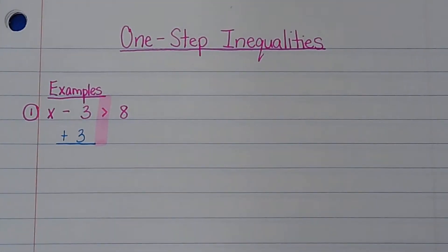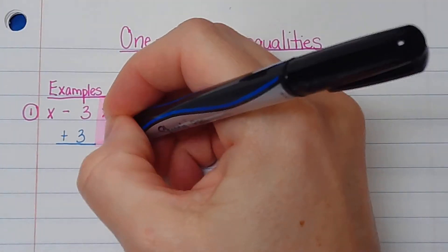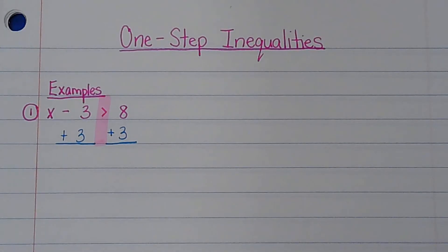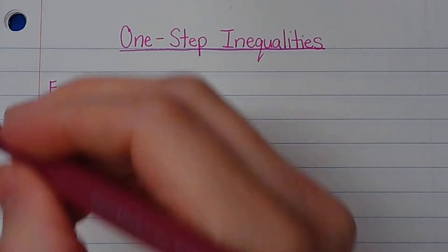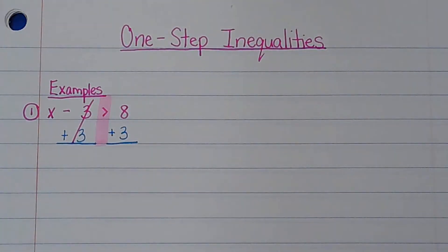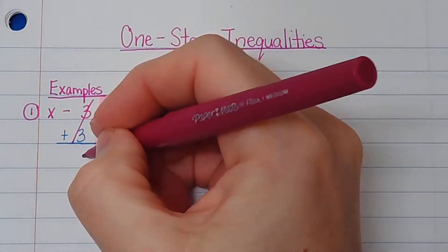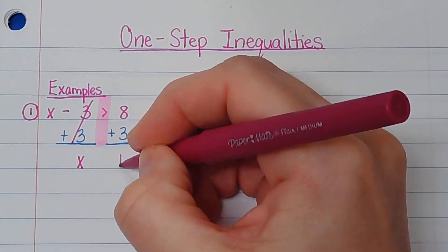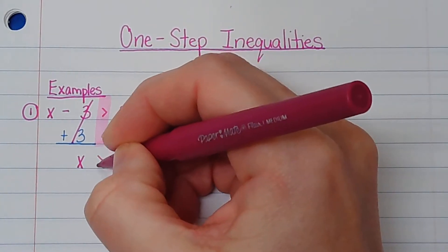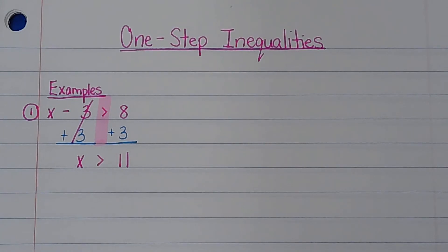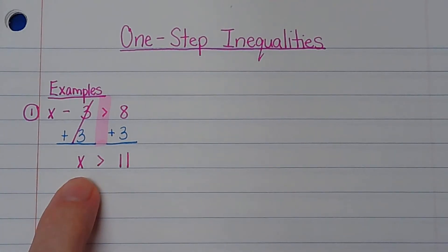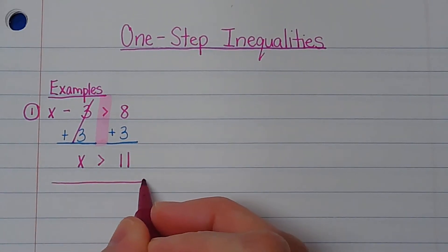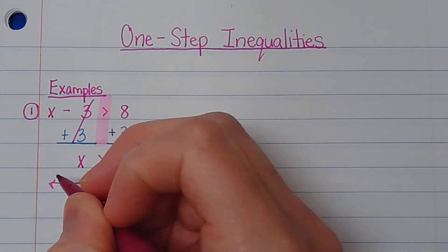Remember, whatever you do to one side, you have to go to the other side and do the exact same thing. Now the reason we do that is so that these will cancel out — they're gone. So the only thing left is x. And now if I do 8 plus 3, I get 11, and I just bring that sign straight down. So x can be anything greater than 11.